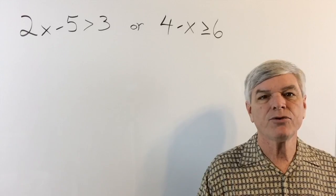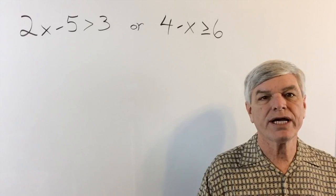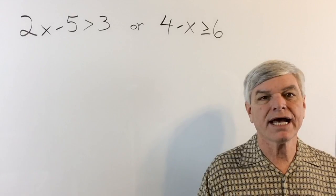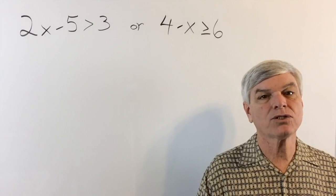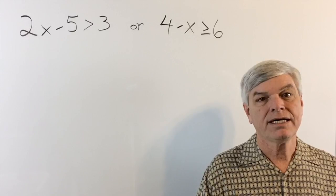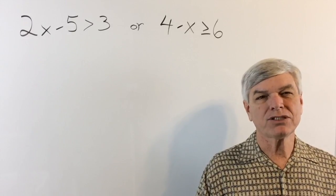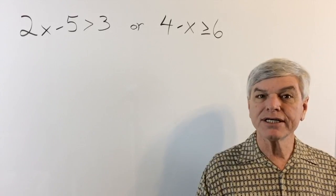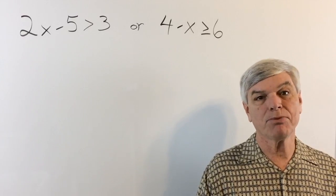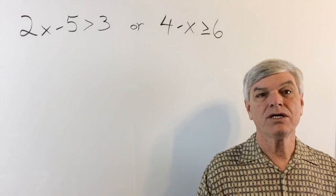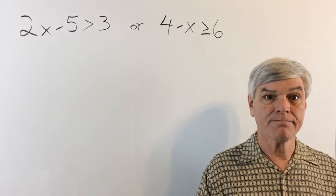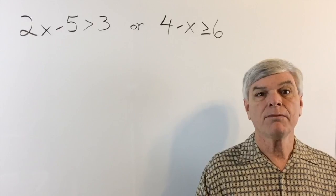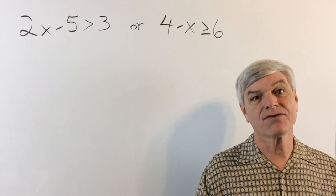We have 2x minus 5 is greater than 3, or 4 minus x is greater than or equal to 6. In the English language OR usually means you get one or the other, but in math it means you're going to get both — both of these are true. Before we graph them, let's solve for them.